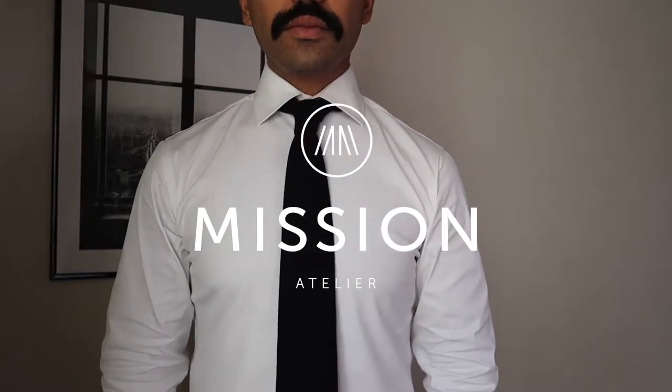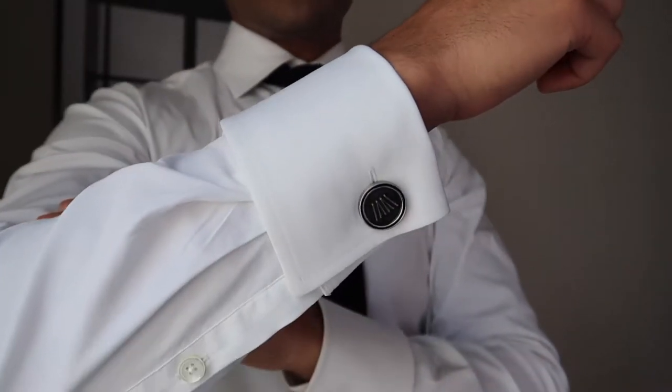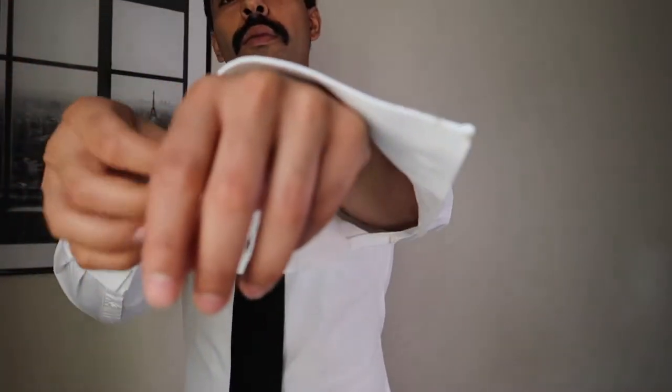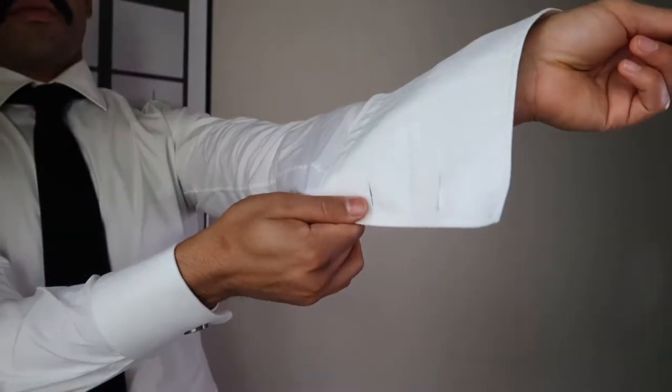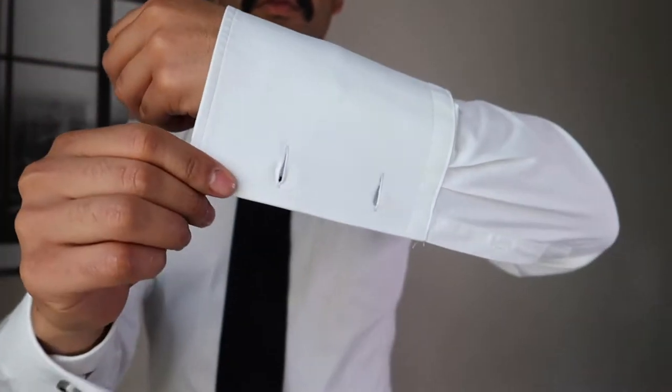This is Mario Rivera with Mission Atelier. Today we're going to show you how to wear cufflinks with a French cuffed shirt, also known as a double cuffed shirt. This style of shirt is typically worn for black tie events or business wear.